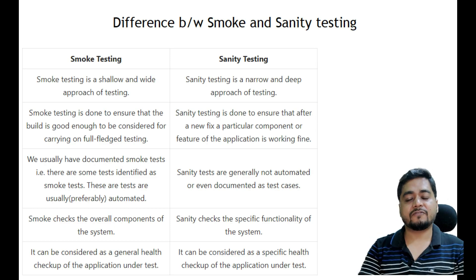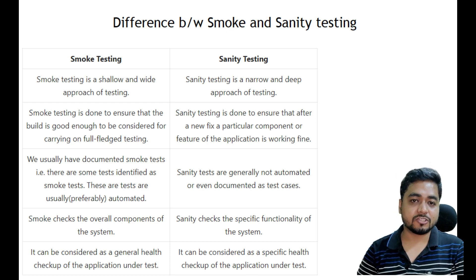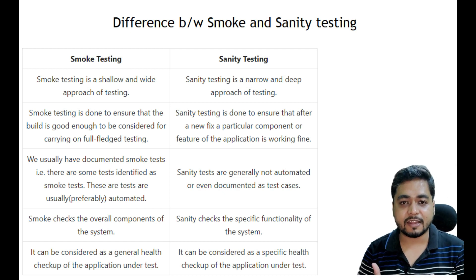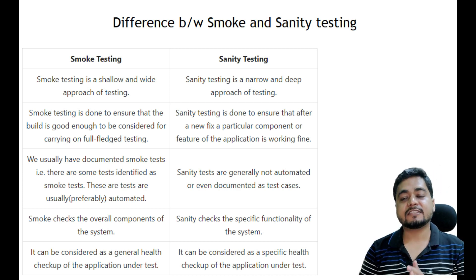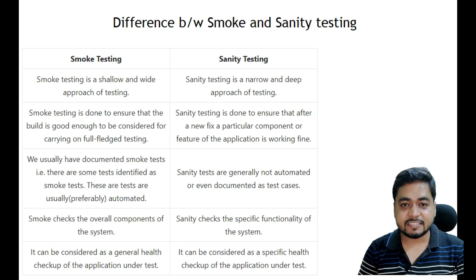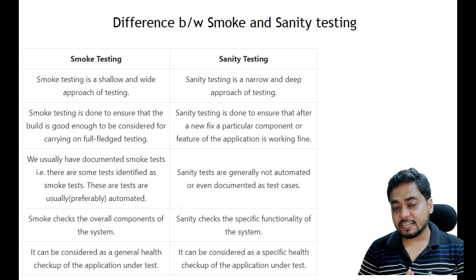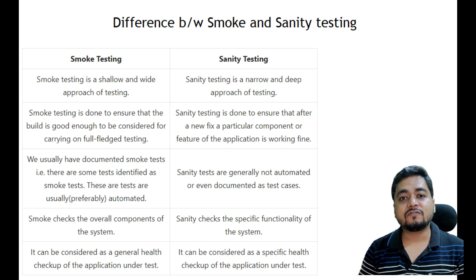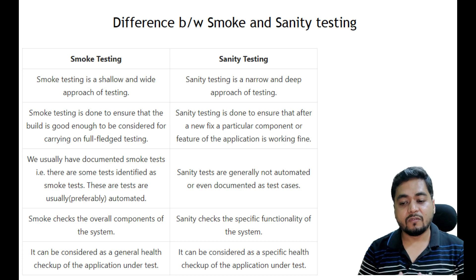Let's recap the differences. Smoke testing is a shallow and wide approach because we first do the basic testing of that product — checking whether the product caters to the business requirement. Sanity testing is a narrow and deep approach because you thoroughly test all the features that came in that build. Smoke testing is done to ensure the build is in good shape and is a correct candidate for the testing team to accept. Sanity testing is done to ensure that the fix to a component or the new functionality of that product is working fine.